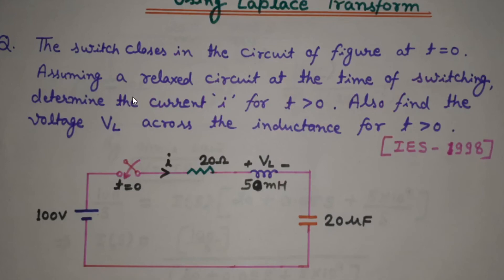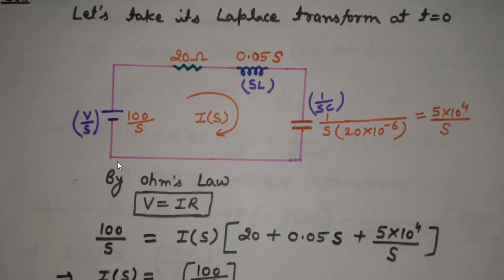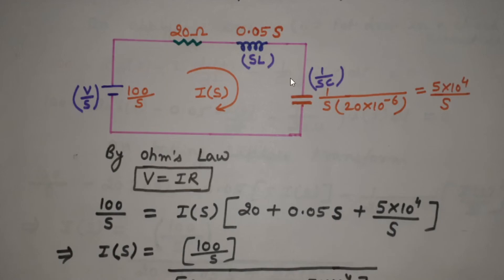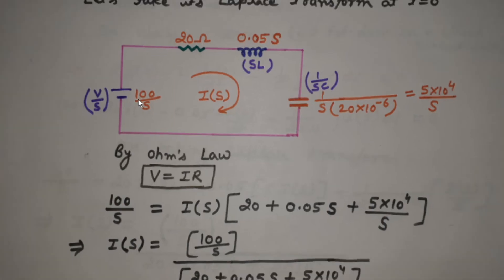The voltage was 100 volts, and for a constant term its Laplace transform is that constant divided by S, so it is 100/S. Now this circuit has been converted — notice these red representations: 100/S, 20 ohm, 0.05S, and 5×10⁴/S. These are the S-domain representations of all these electronic components. Now we can treat this circuit as a simple resistive circuit.